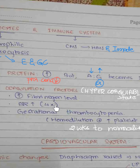ESR increases approximately four times during pregnancy. There is gestational thrombocytopenia, a decrease in platelet count, due to hemodilution and increased platelet consumption. Clotting factors 7, 8, 9, 10, and 1 increase during pregnancy; clotting factors 2, 5, and 12 remain unchanged, while the rest decrease. It takes approximately two weeks for these to normalize after delivery.